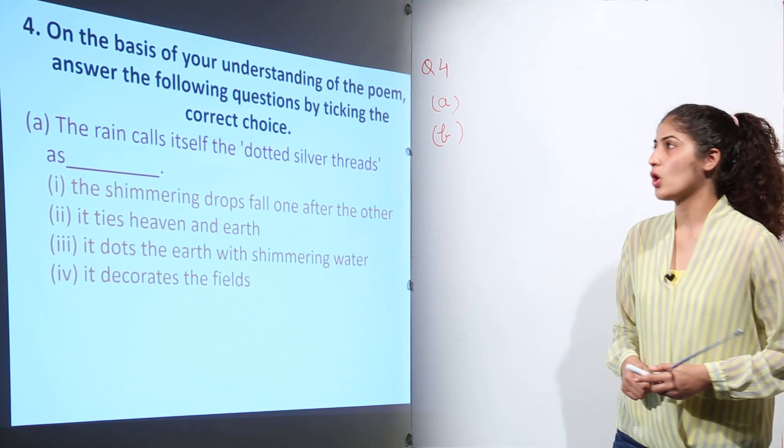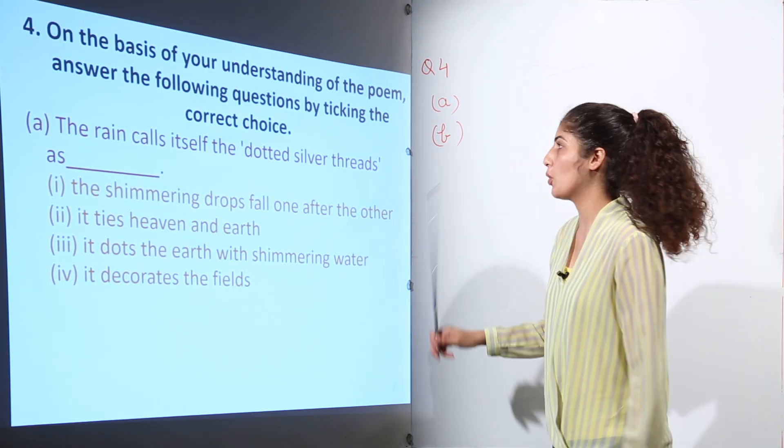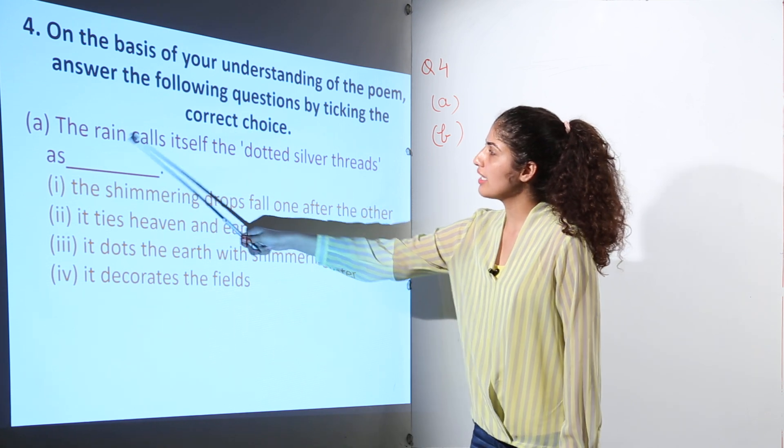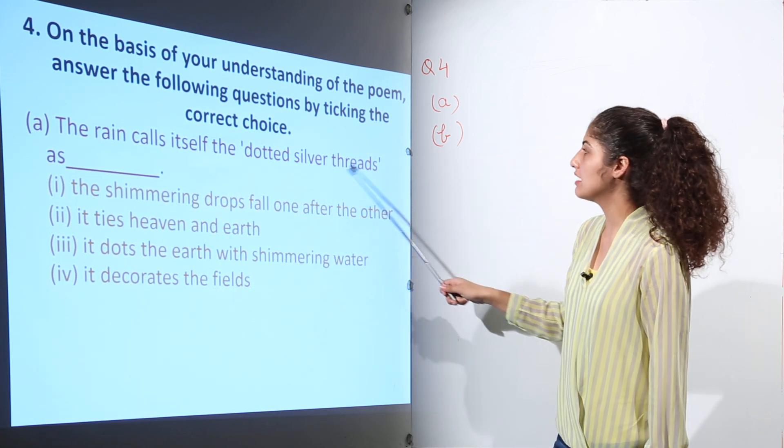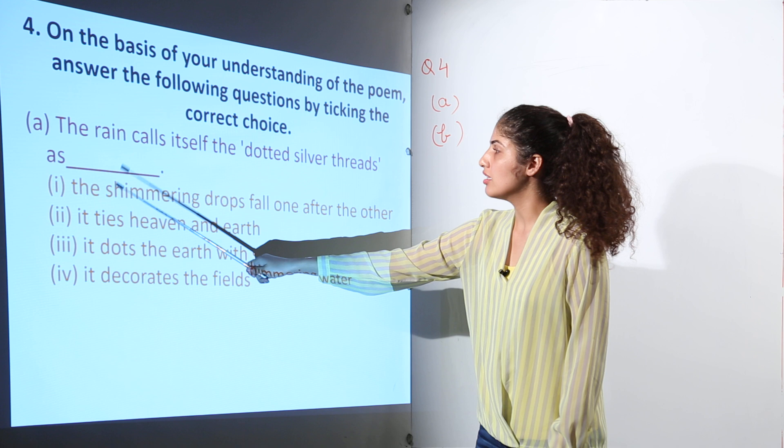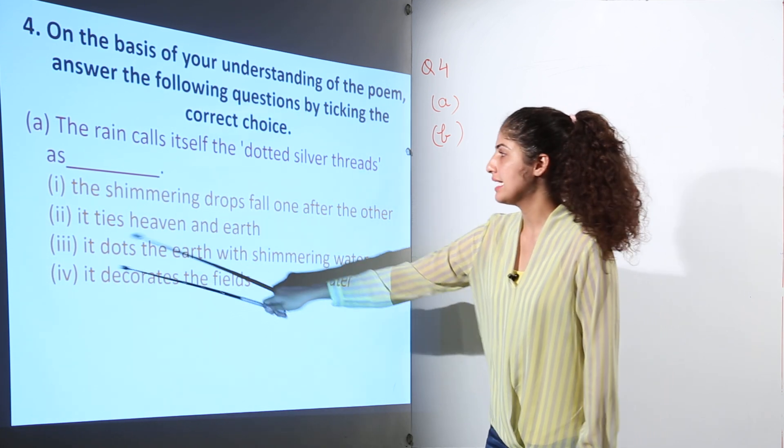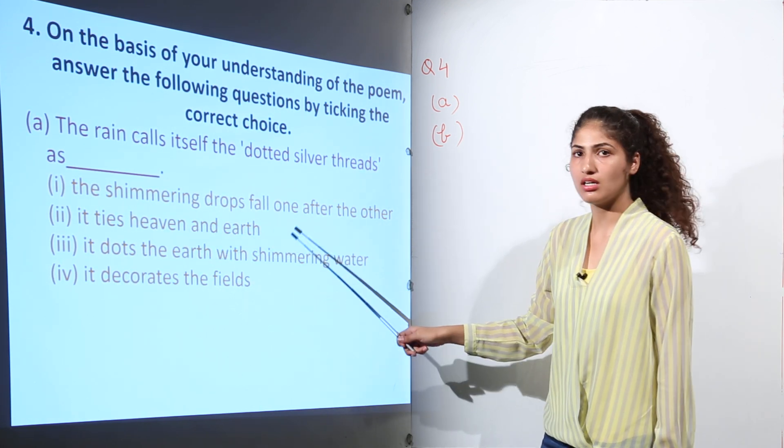Now let us answer some questions on the basis of our understanding of the poem. Question one: The rain calls itself the dotted silver threads as (a) the shimmering drops fall one after the other, (b) it ties heaven and earth,